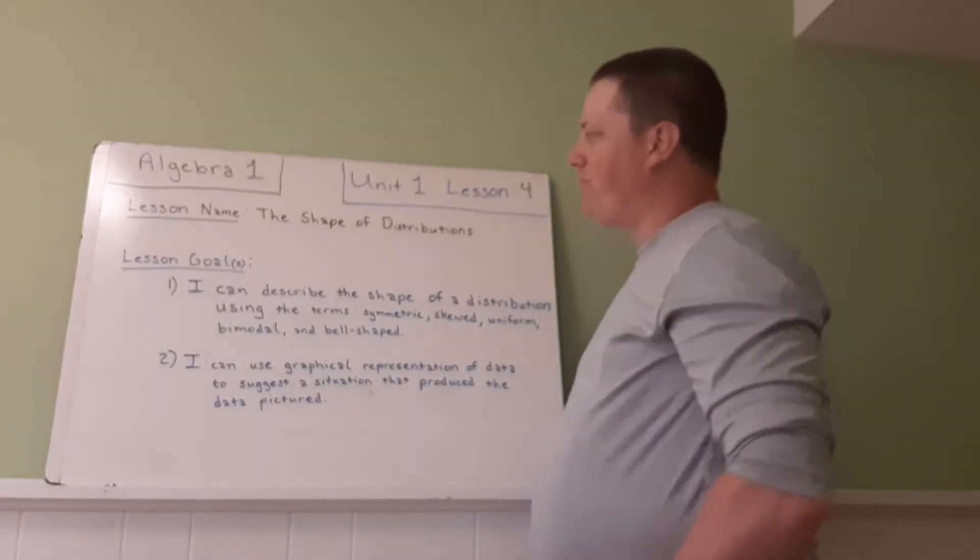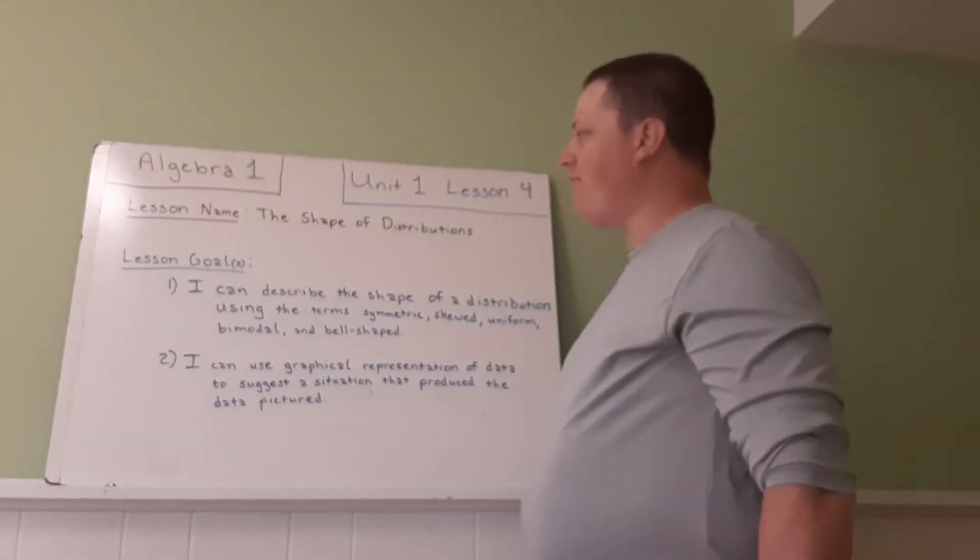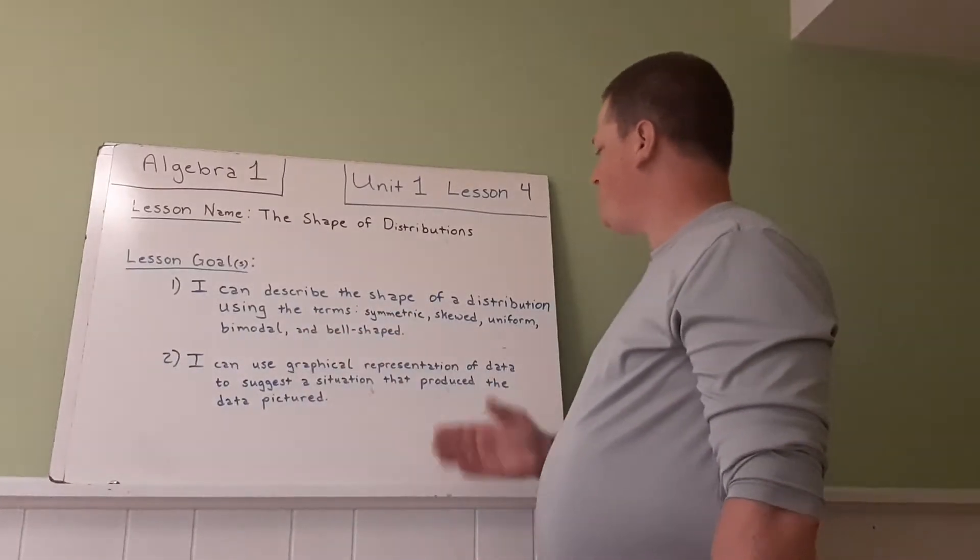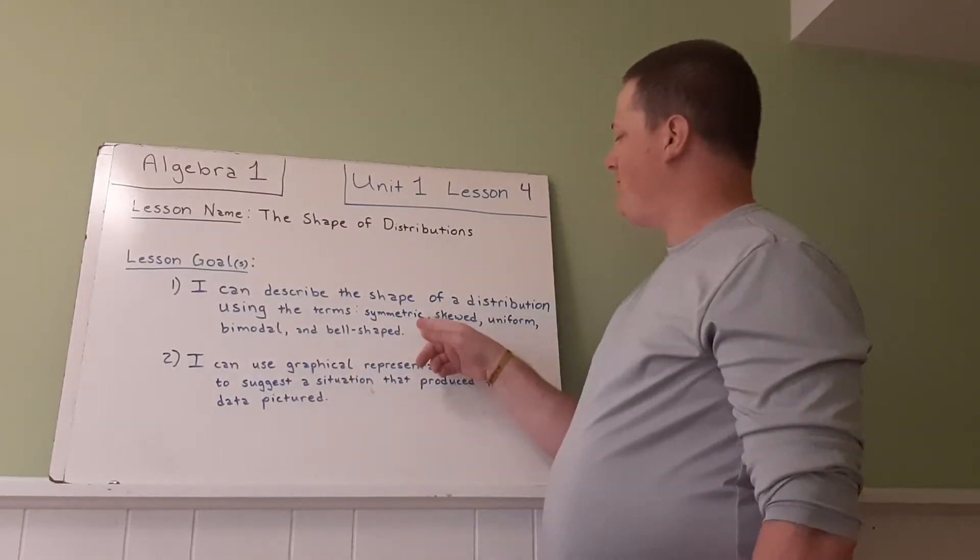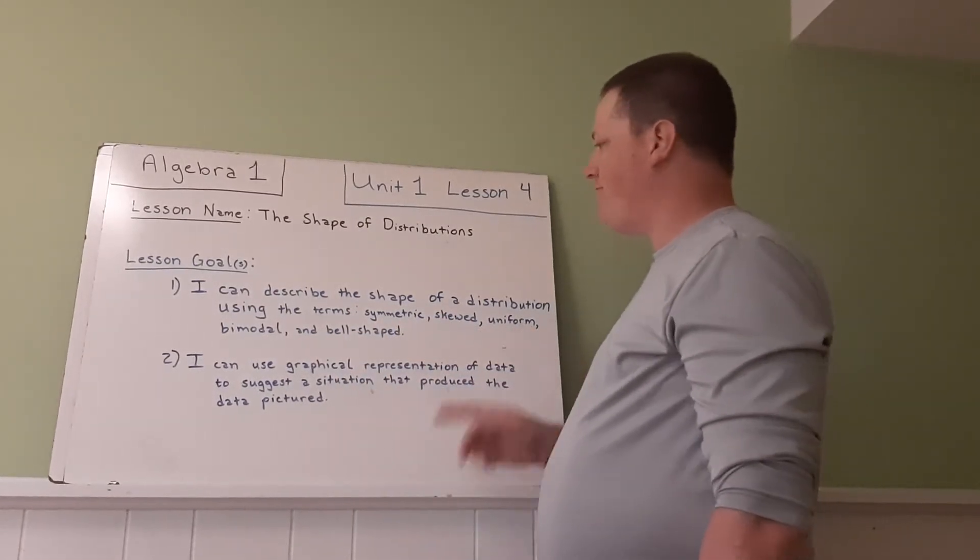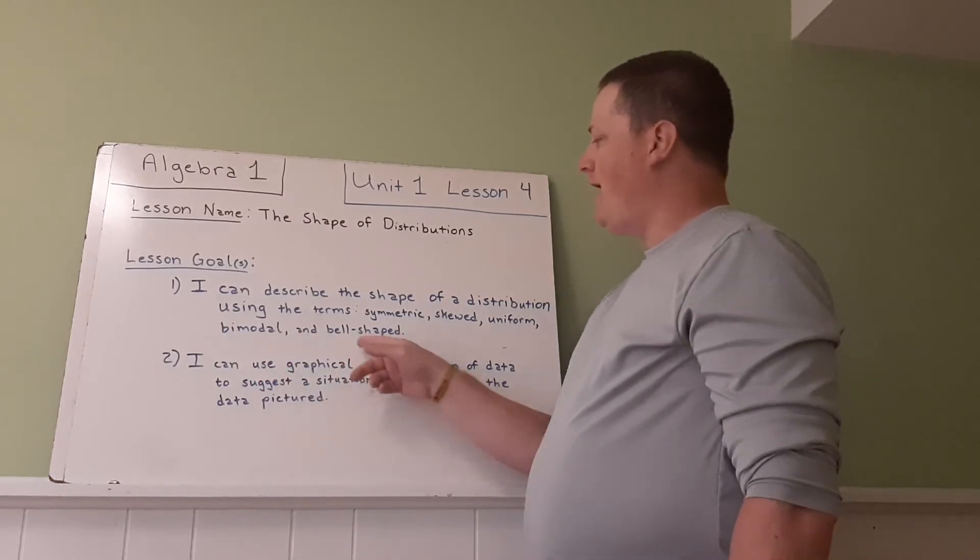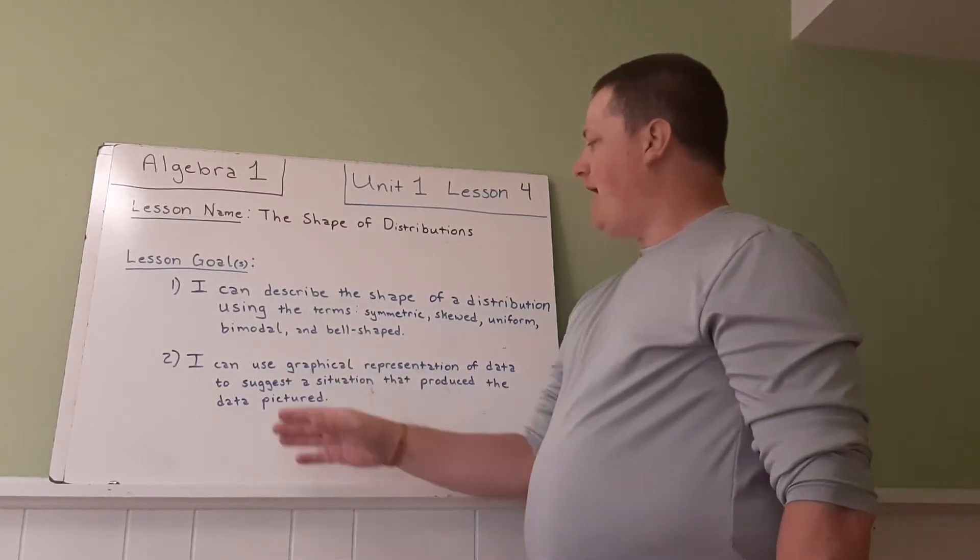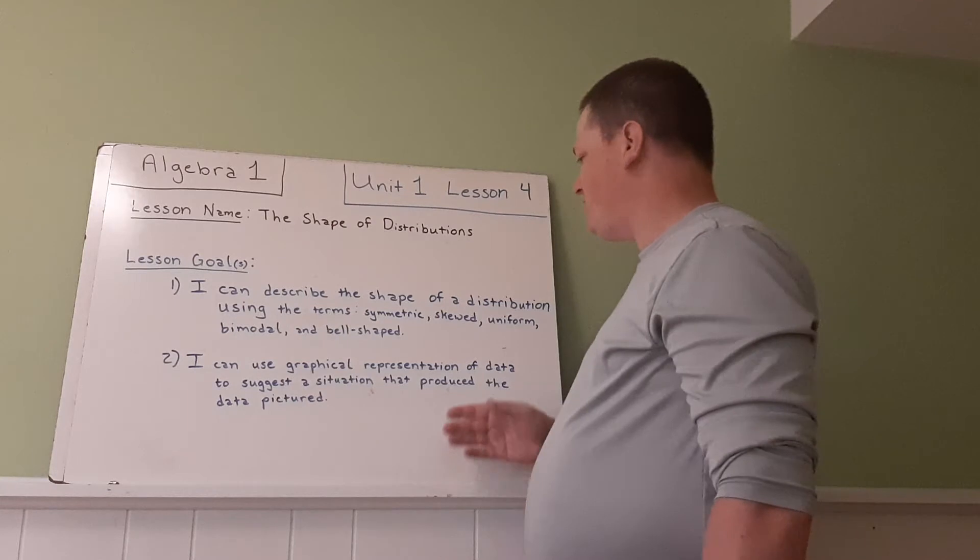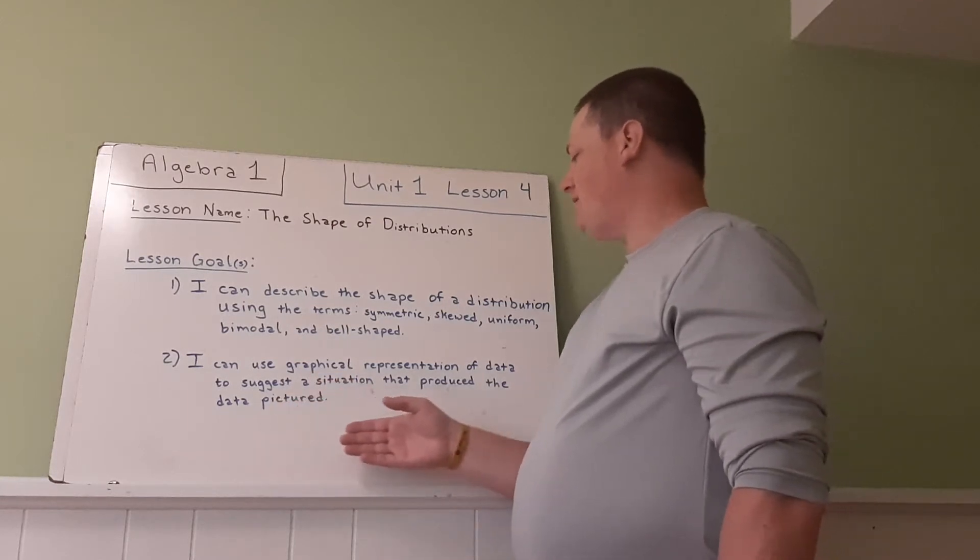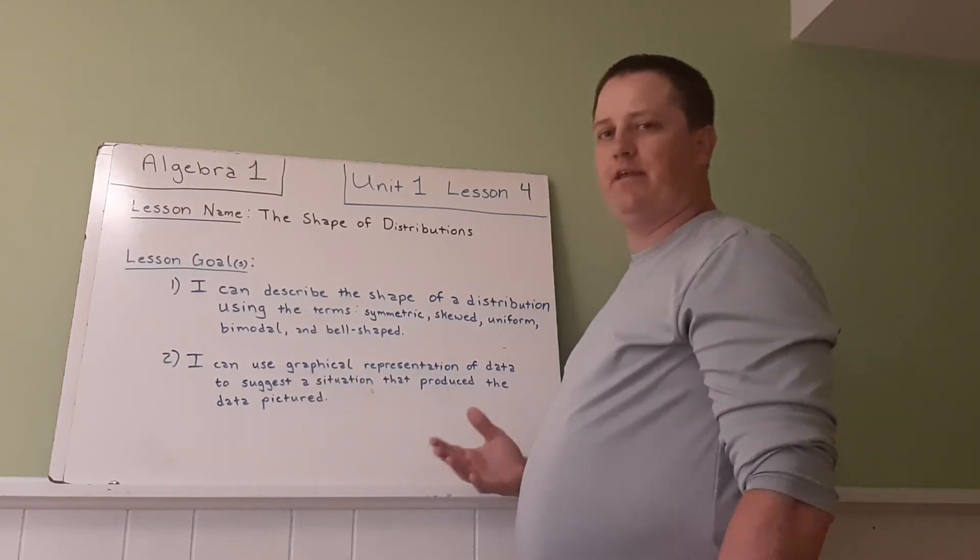We have two goals for this lesson. First goal, I can describe the shape of a distribution using the terms symmetric, skewed, uniform, bimodal, and bell-shaped. I can use graphical representation of data to suggest a situation that produced the data.